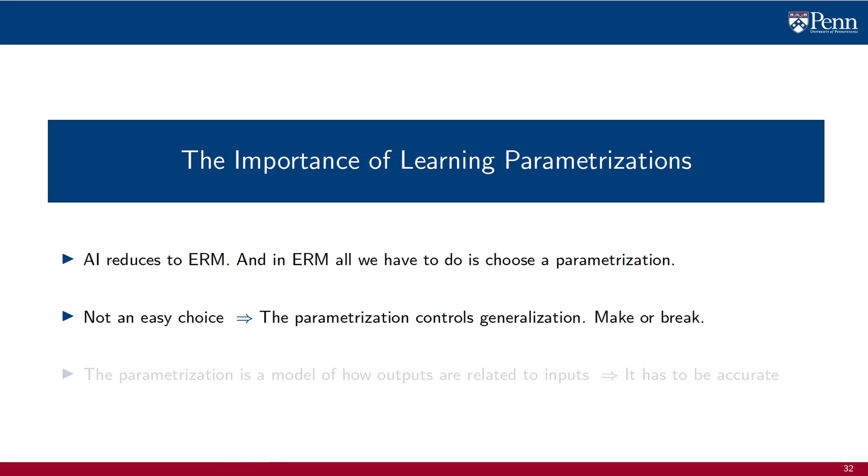We will illustrate with some examples that this is not an easy choice. The parametrization controls generalization outside of the training set, and it can make or break an AI system. When all is said and done, the parametrization is a model of how outputs are related to inputs, and as is always the case of models, they have to be an accurate representation of nature.